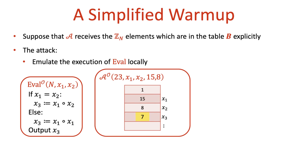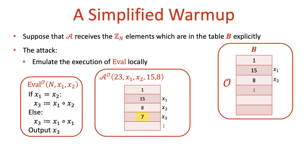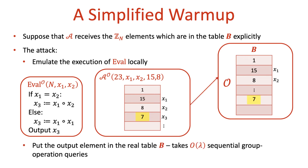So are we done? Not quite. Recall that outputting a group element in the generic group model means putting the corresponding Z_n element in some entry of the table b, and outputting a pointer to this entry. But since the first entry of the table is 1, the attacker can put any Z_n element in the table with roughly log n group operation queries. If n is at most exponential in the security parameter lambda, this means that the attacker makes roughly lambda sequential queries.